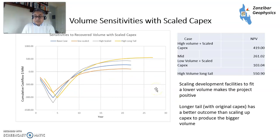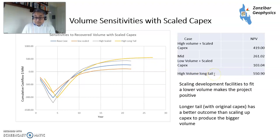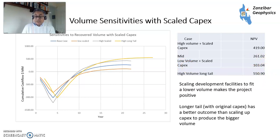Sensitivities of scaled CAPEX — what happens if we know the volume is going to be less or more. For example, high volume with scaled CAPEX looks pretty healthy. But the long tail, where you use a mid-case size FPSO and just produce for a lot longer, gives the best value of all, even though quite a lot of that production is relatively late in life. And if you have low volume but appropriately scaled CAPEX — so you scale your facility accordingly — you become positive. Appraisal works. Knowing what you have works. Trying to get that constrained as much as possible.